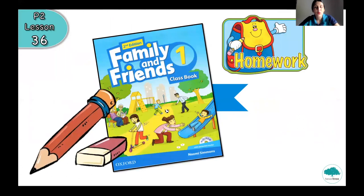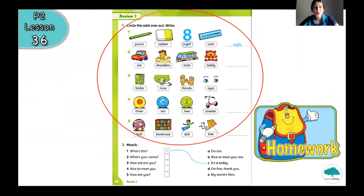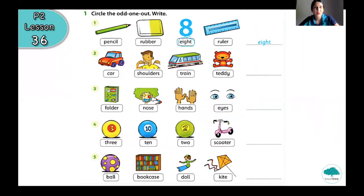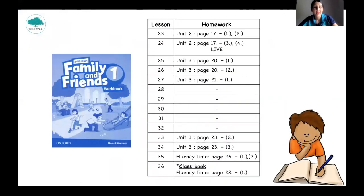Now I want you to prepare your class book because I want to explain your homework. Open page 28, section 1. You have to do this task — it is similar to the previous activity. For example, number 1: look at the pictures and circle the odd one out. We can see pencil, rubber, 8, and ruler. Eight will be the odd one out because 8 is a number and pencil, rubber, and ruler are school things. You have to circle and write 8. Let's check next time. You can see the page of your homework — if you haven't finished something, please do it.